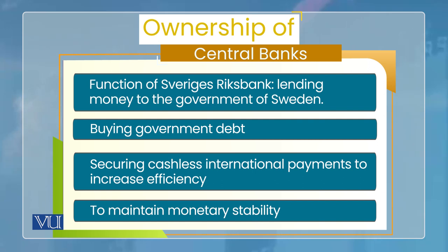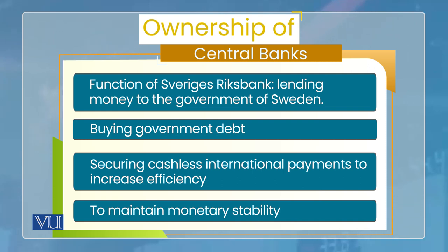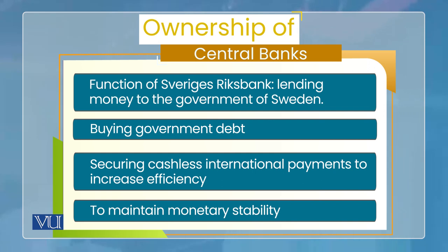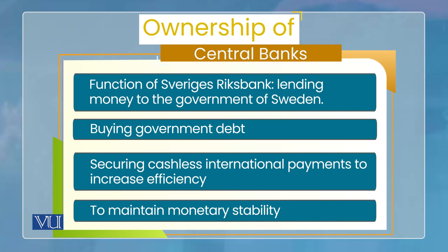دوسرا function تھا buying government debt — یعنی وہ government کا debt buy کرتا تھا جو government کرج لینے کے لیے offer کرتی تھی۔ پھر securing cashless international payments to increase efficiency — یعنی international payments کا ایسا طریقہ جس میں currency physically involved نہ ہو تاکہ international trade کی transactions میں economic efficiency بڑھے۔ اور ایک objective تھا to maintain monetary stability یعنی money کی value میں کوئی بڑی تبدیلی نہ ہو۔